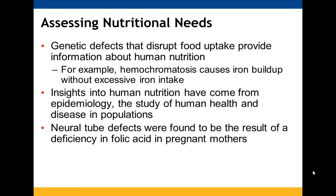We can look at nutritional needs to identify genetic issues at play. For example, hemochromatosis will cause iron to build up even if you're not taking in a lot of iron. How we've been able to examine these is through epidemiology. One practical example is folic acid — if you are an expecting mother, they will typically have you take folic acid tablets or eat foods containing folic acid because that helps prevent neural tube defects.